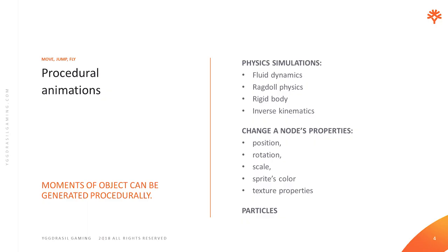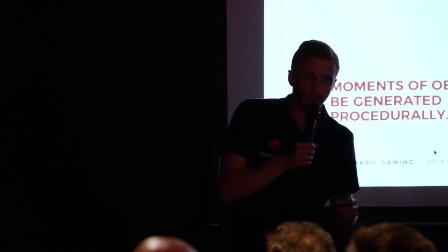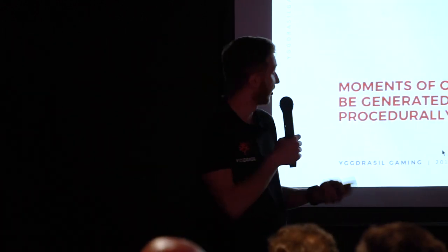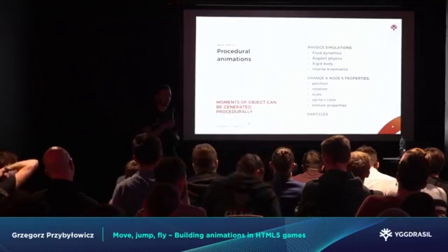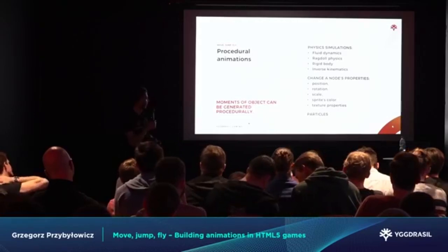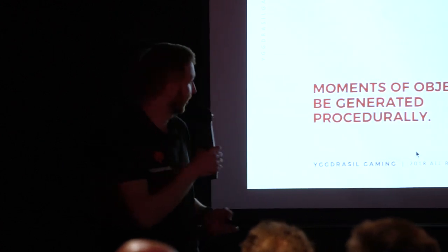So the first topic will be about procedural animations. This is a huge topic, but in general it's about generating the movement of objects procedurally — simply speaking, in code. The most obvious use case is physics simulations, but that's beyond the scope of this presentation. The point is that even without knowing physics equations or having physics engines, we can create cool animations using tweens, by changing properties of nodes — sprites in Pixi, movie clips, or animated sprites. We can change position, rotation, scale, and so on. Particles also count as procedural animation, but that will be covered at the end.